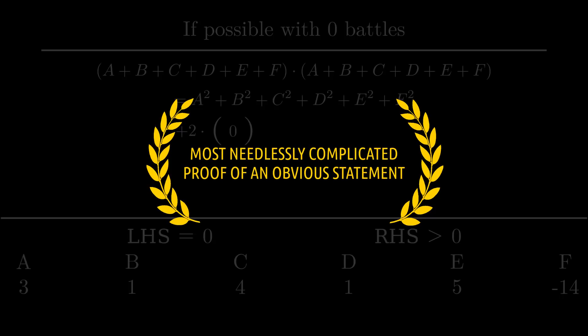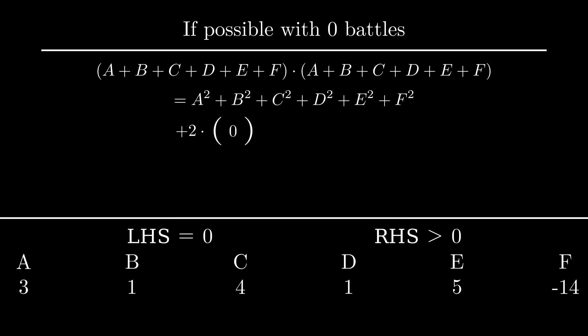Wait, I'm not done. I want to point out that the way I made the LHS 0 was by setting the value of F to be the negative of A+B+C+D+E. That way, whatever values A through E had, the sum of A through F will always be 0. We have fixed the value of F depending on the others and ensured that the LHS is 0 forevermore. That's why I've greyed out the LHS completely.